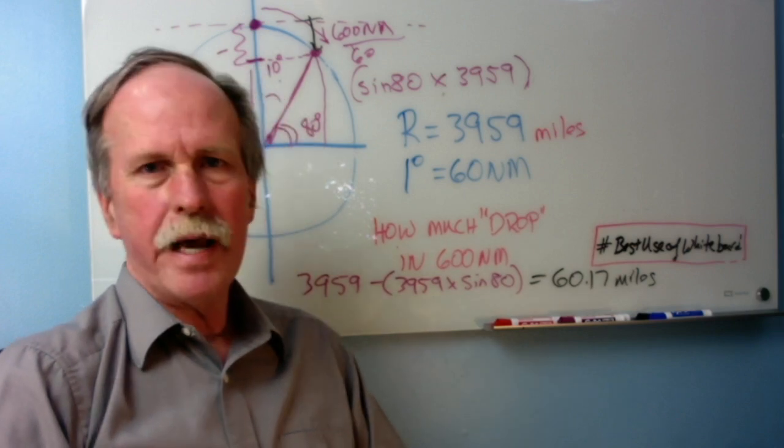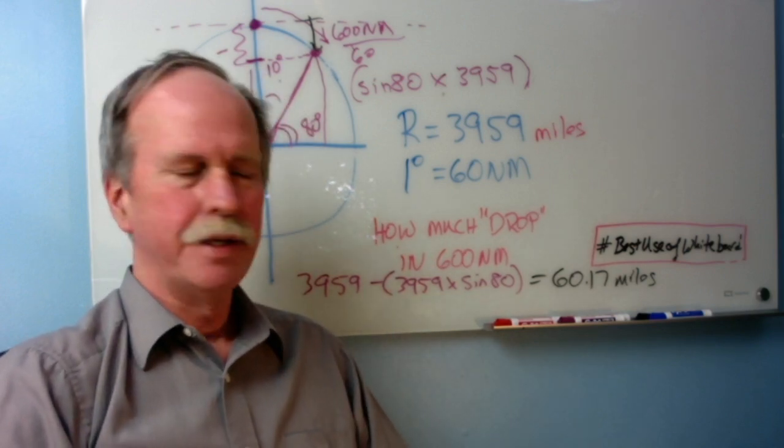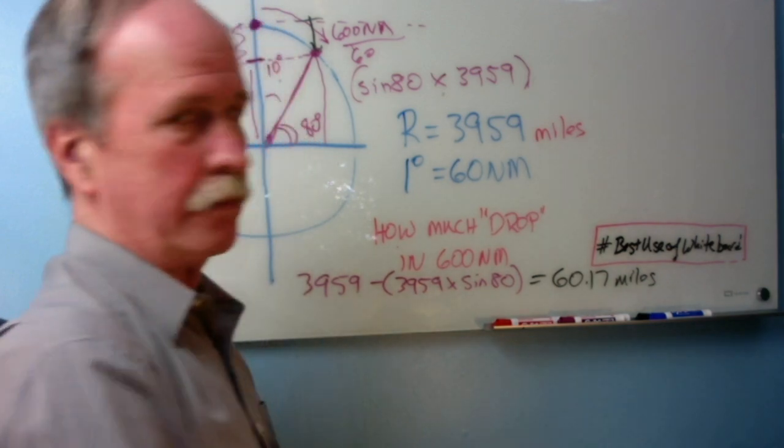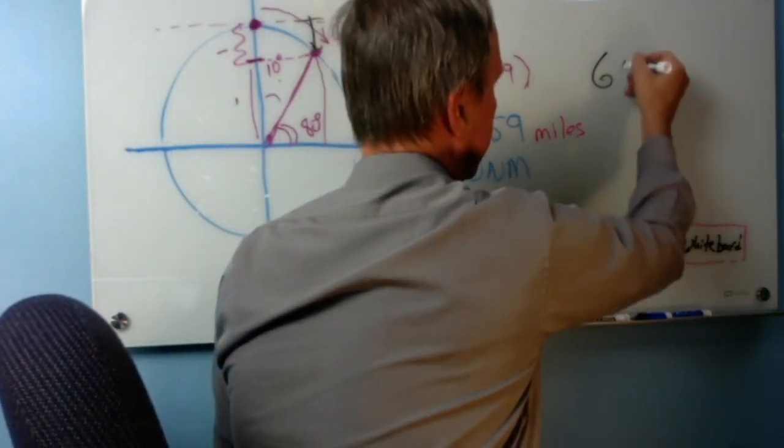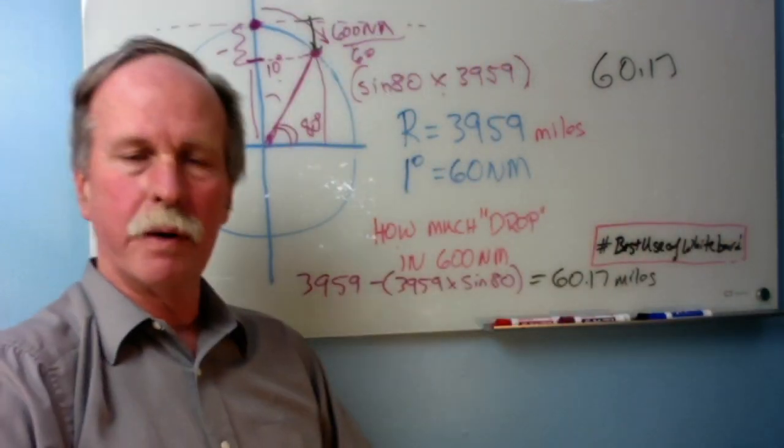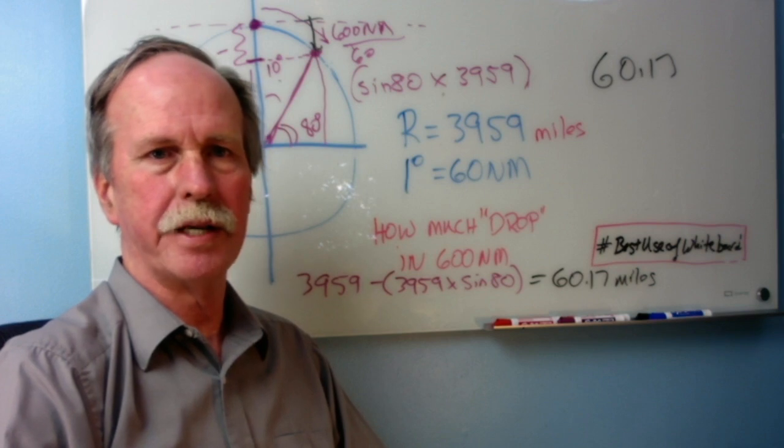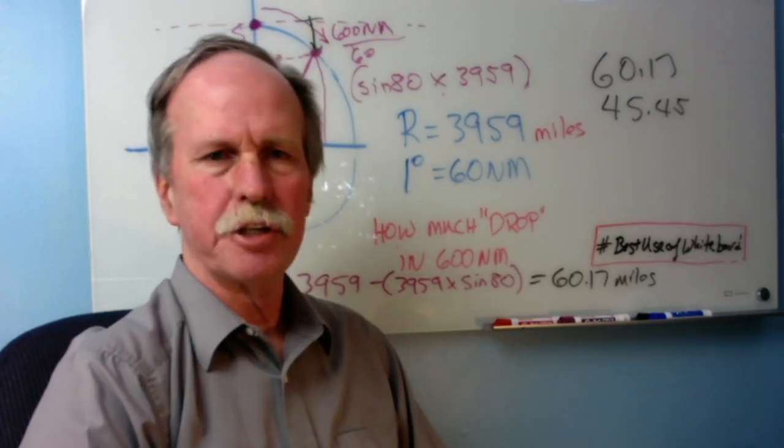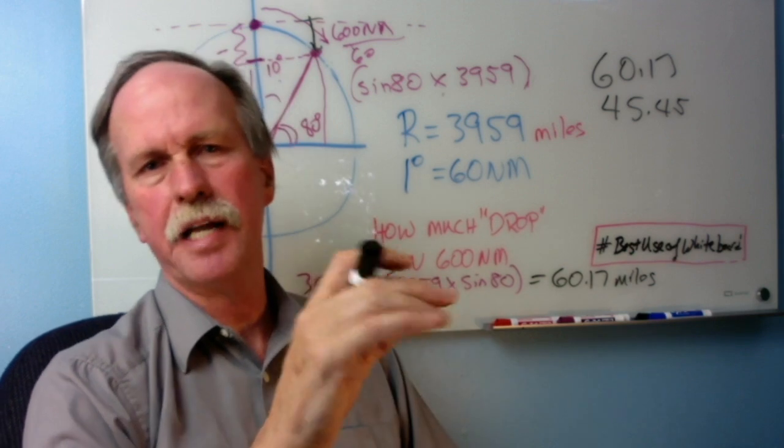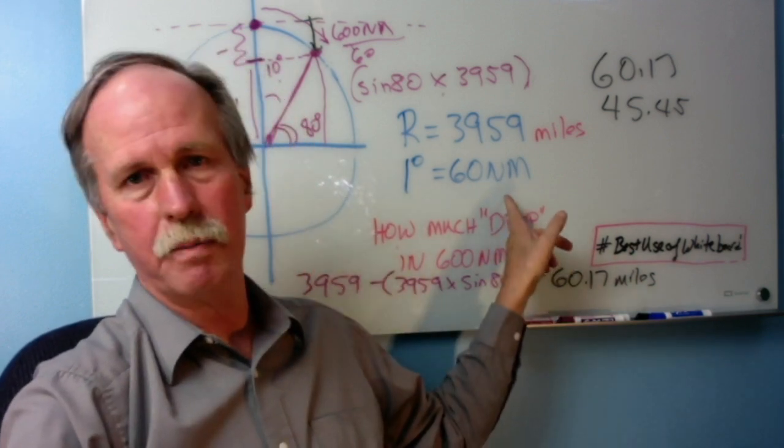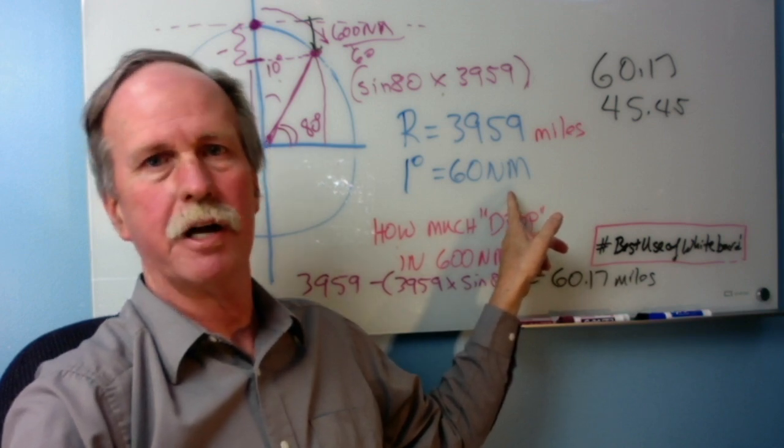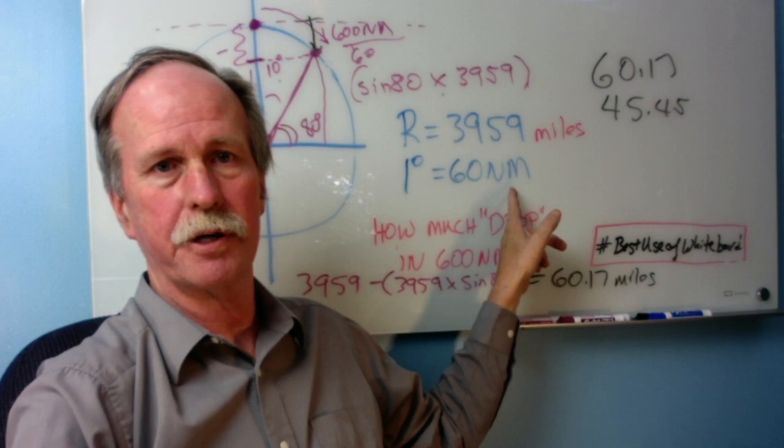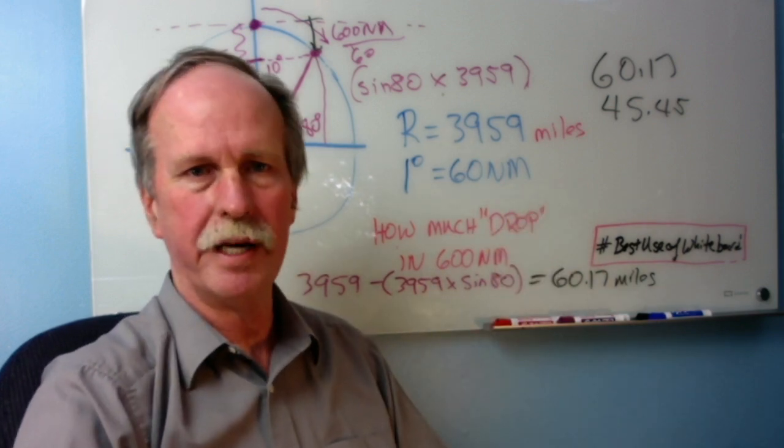While we're at it, let's compare this to the old 8 inches per mile squared number. So the actual number is 60.17 miles. If you do the 8 inches per mile squared for 600 miles, it's 79.24 miles. That's because the 8 inches per mile squared is a surveying shortcut designed to be used over short distances. The only reason we have the nautical miles is because it was convenient for 600 nautical miles divided by 60 nautical miles per degree. We got our 10 degrees. That's really all we needed that for.